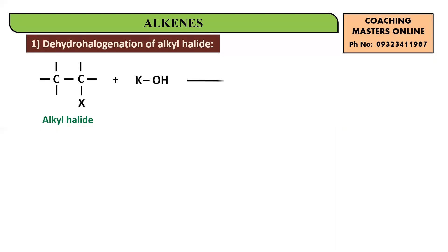You are treating this alkyl halide with KOH in alcoholic conditions. Please remember this, because we need to remove both hydrogen and halogen — that is, an elimination process. You require KOH which is alcoholic in nature. If you take aqueous KOH, it would carry out a substitution reaction. For elimination, alcoholic conditions are necessary.